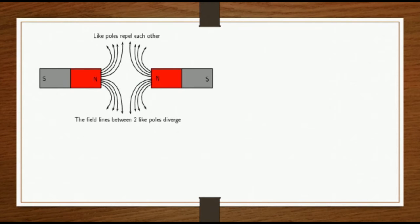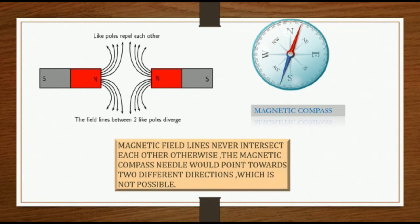Magnetic field lines never intersect each other. Otherwise, the magnetic compass needle would point towards two different directions, which is not possible.